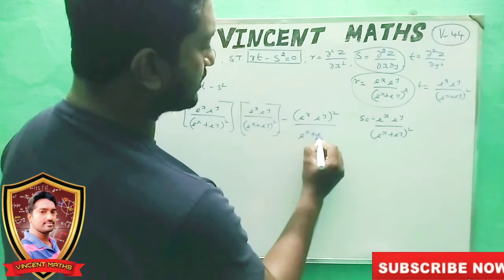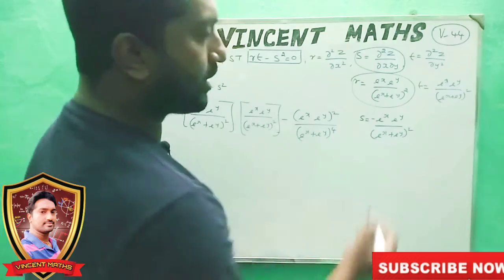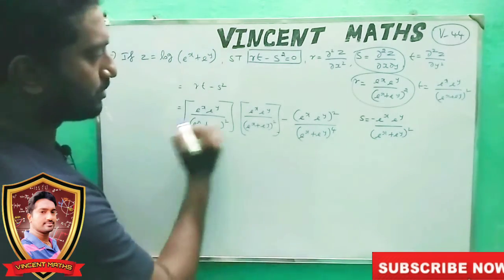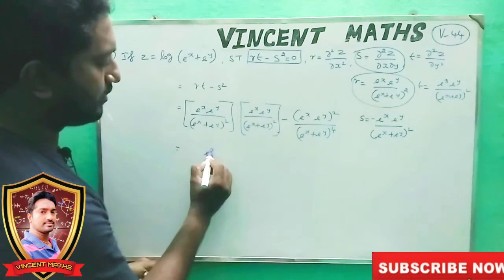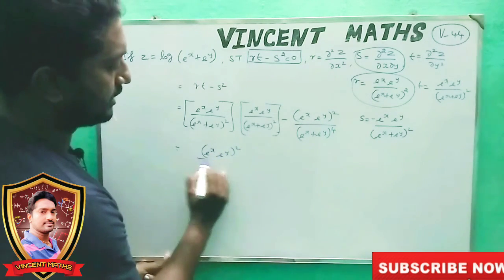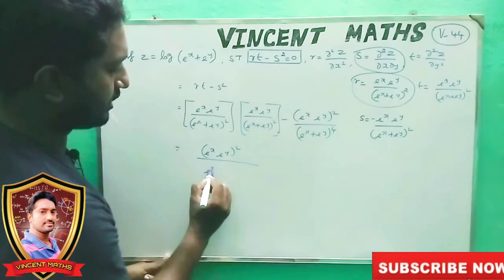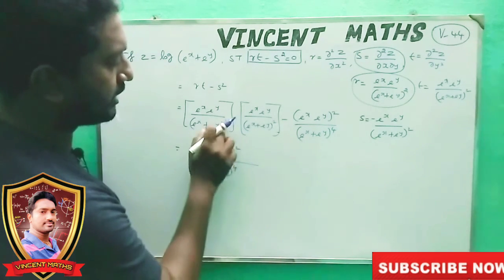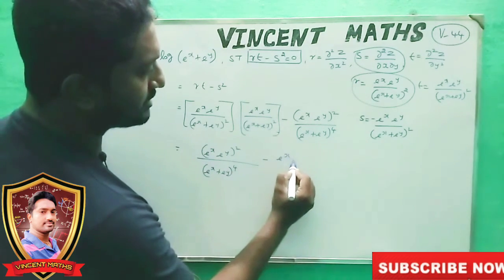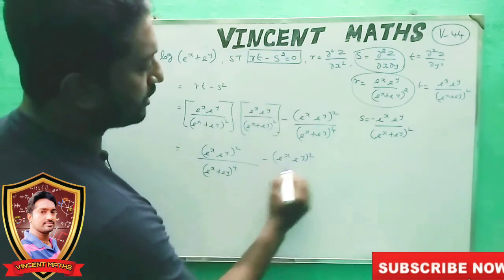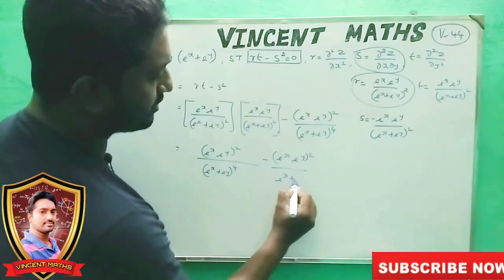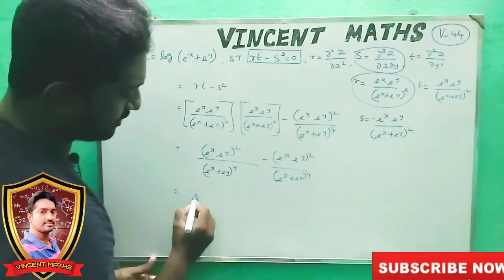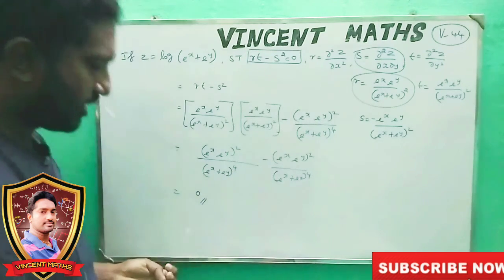e power x plus e power y is to the power 4 in the denominator when we multiply. So r into t minus s squared: the numerator gives e power x plus e power y whole squared minus e power x into e power y whole squared, divided by e power x plus e power y whole power 4, which equals zero.